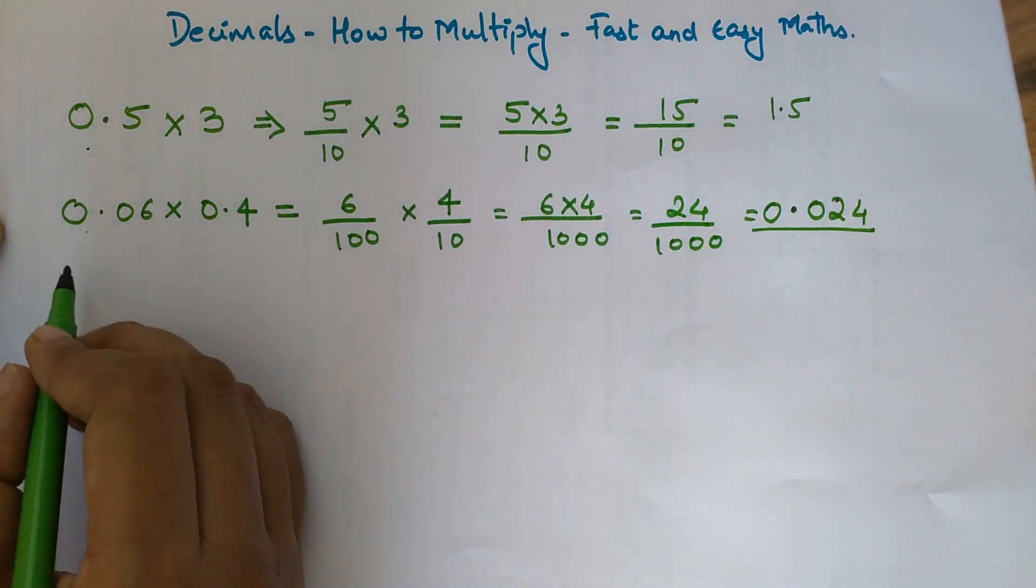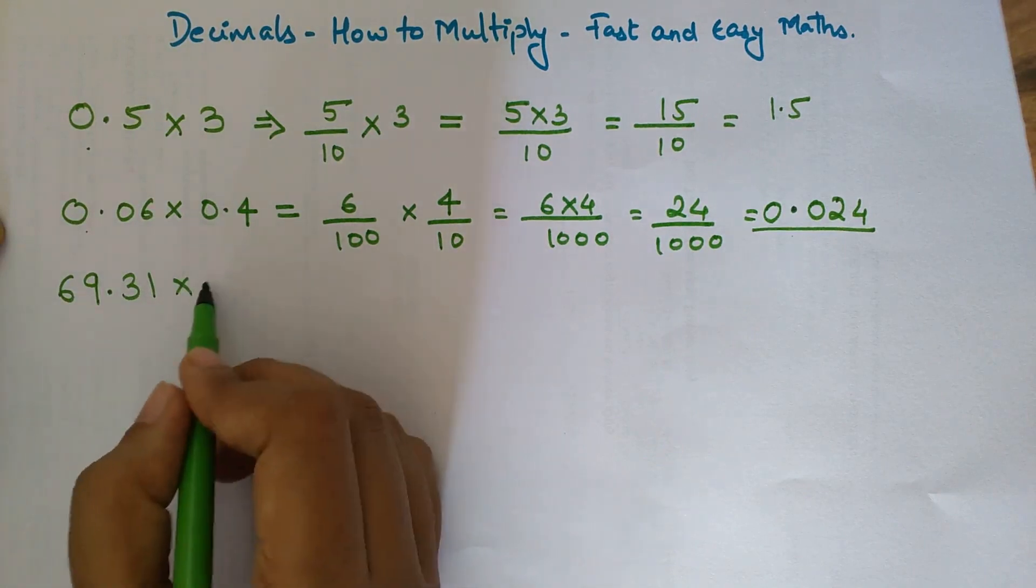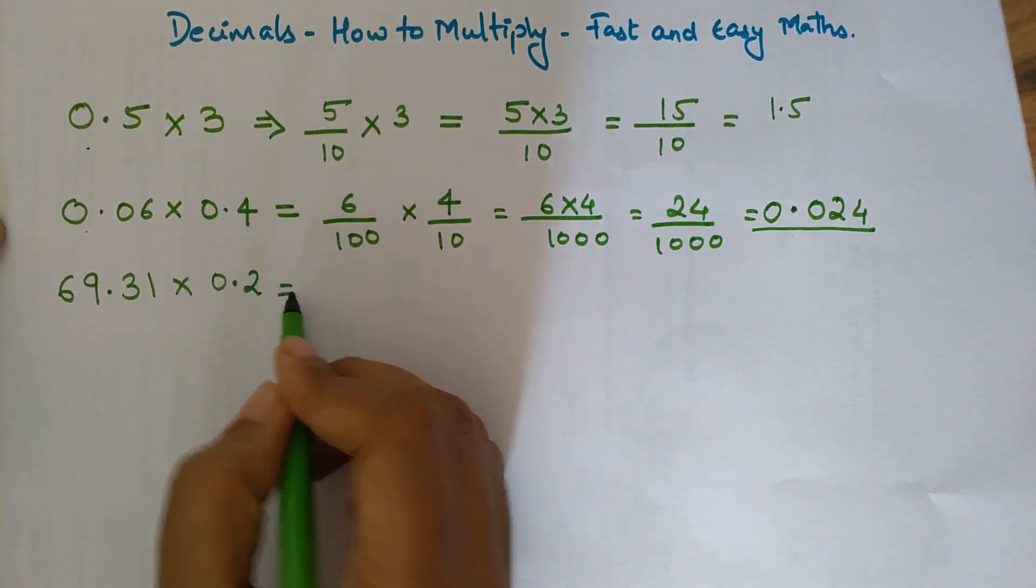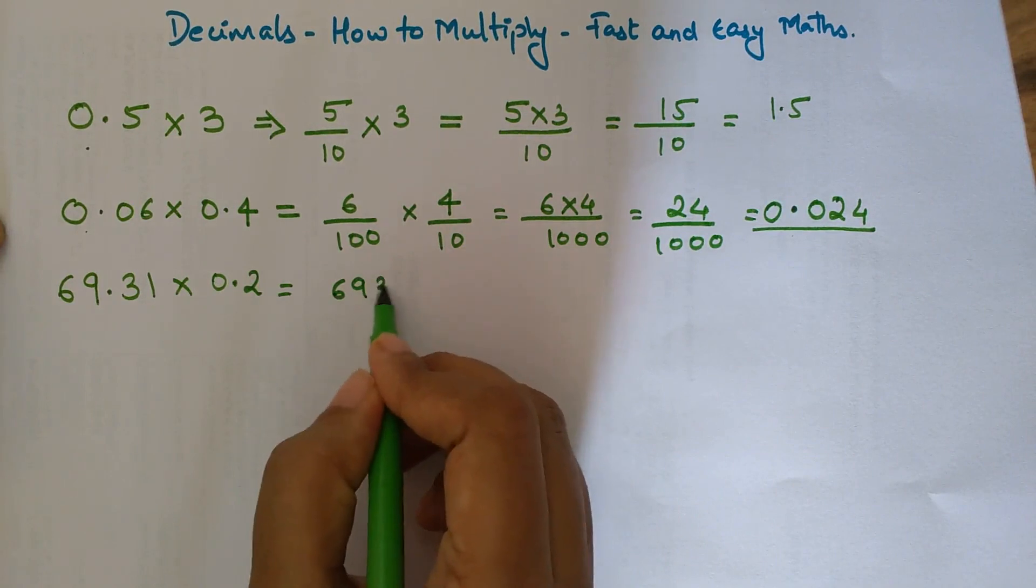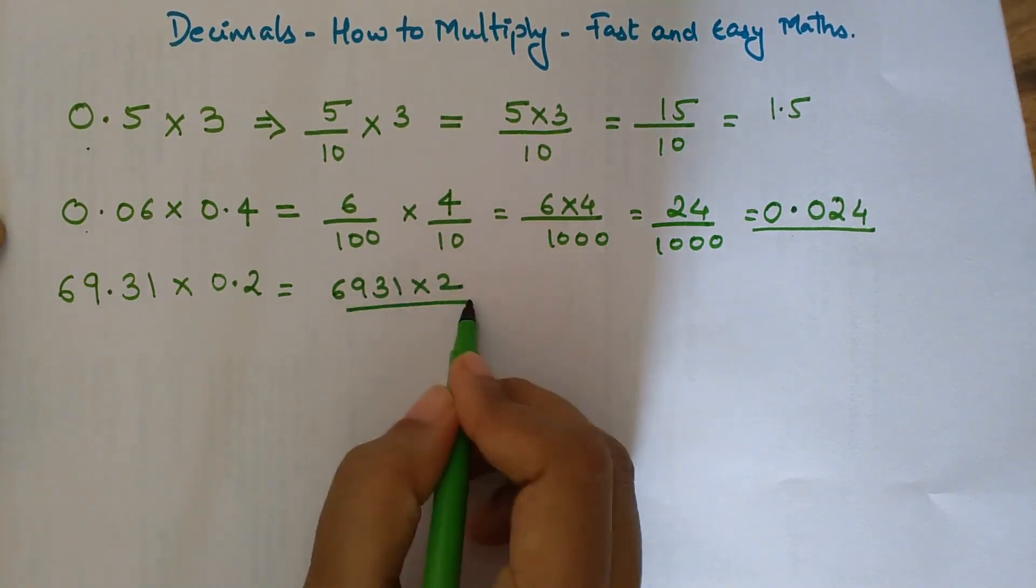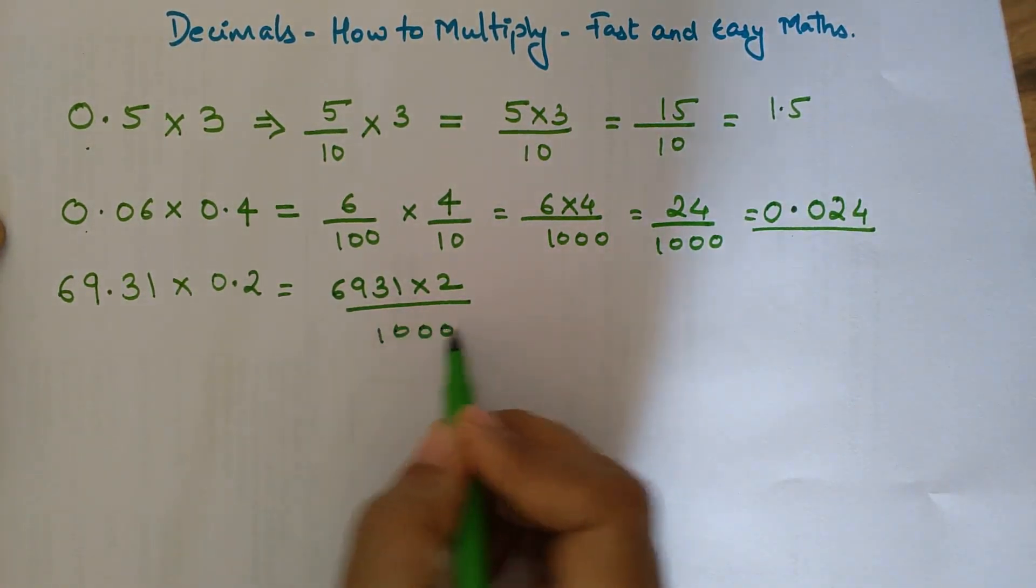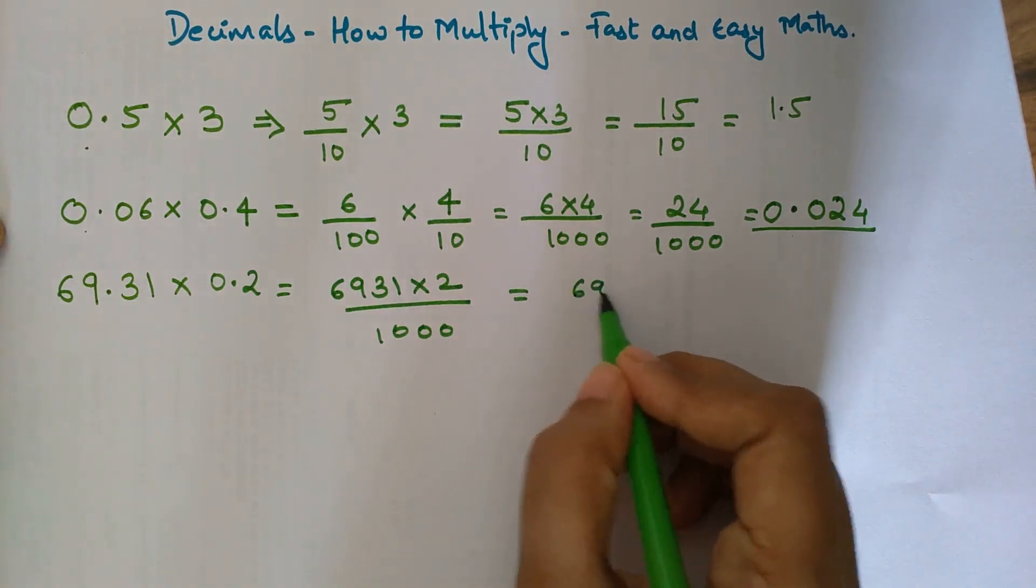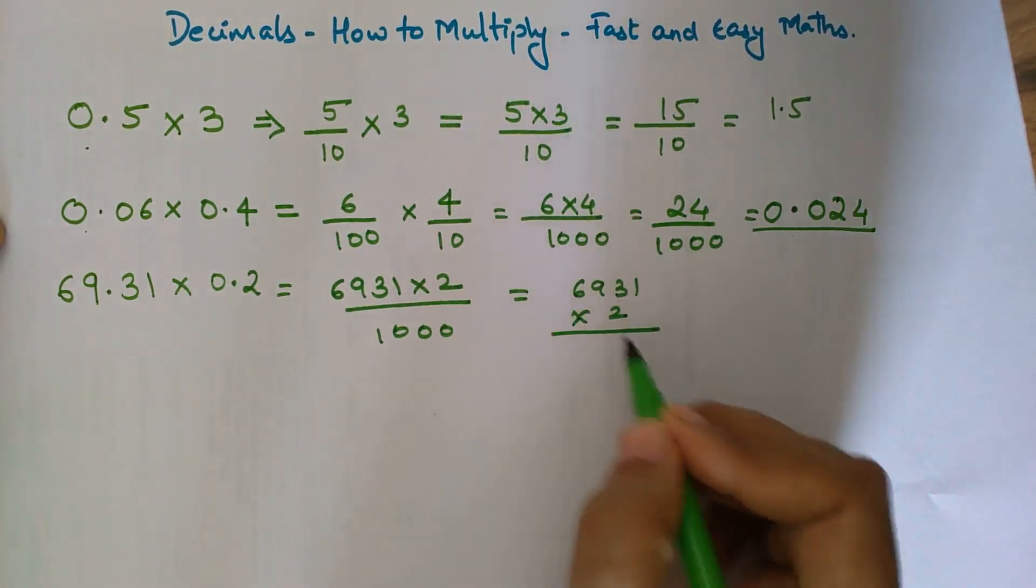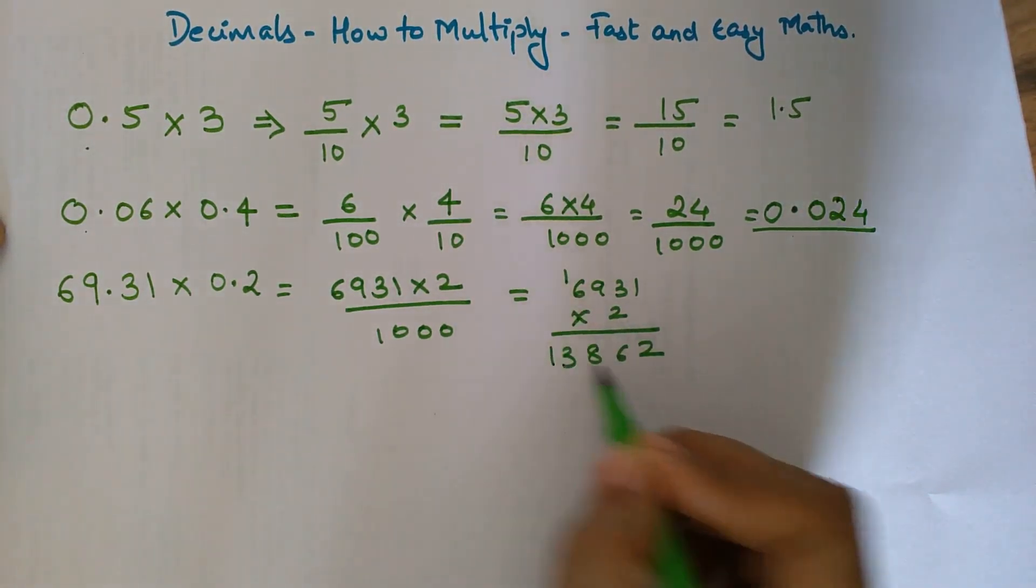Let's see how to multiply 69.31 into 0.2. 69.31 can be written as 6931 into 2 upon 1000. When I multiply 6931 into 2: 2 into 1 is 2, 2 into 3 is 6, 2 into 9 is 18, write 8 and carry 1, and 6 into 2 is 12 plus 1 is 13.